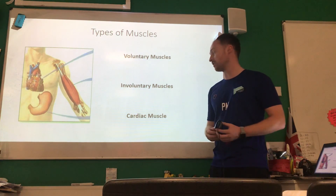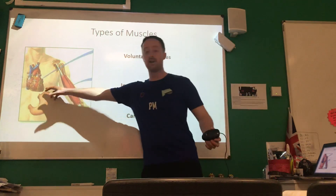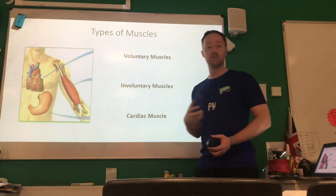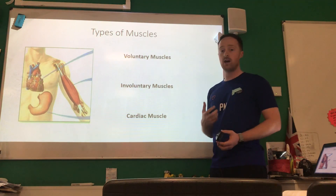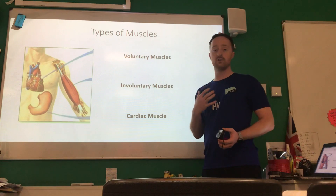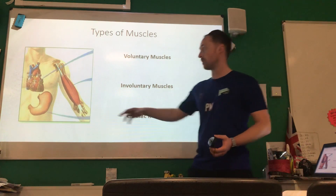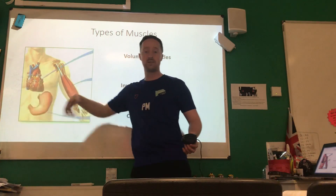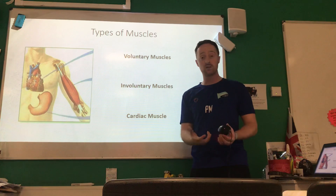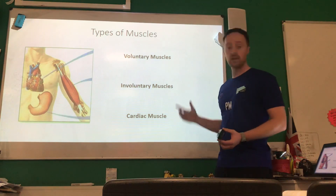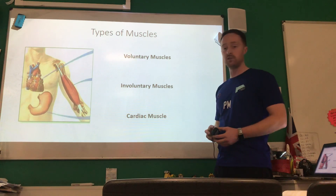The final type of muscle you need to know about is cardiac muscle. Cardiac muscles are found in the heart and they contract involuntarily but continuously. The brain sends nerve impulses and electrical impulses over the heart which helps the cardiac muscle to contract. They're really important muscles because if they stop working, our heart stops working. Make sure you know the three types of muscle and examples of each.